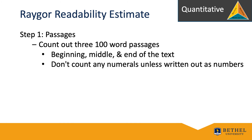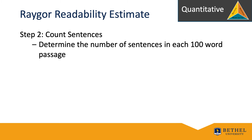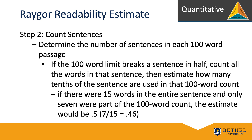Don't count any numerals unless they are written out as numbers — for example, not '4-3' but 'forty-three.' Rager is an average of the three passages. You can do a quick count conducted on one passage, but it is guaranteed to be less accurate. Step 2: Count the sentences. Determine the number of sentences in each 100-word passage. If the 100-word limit breaks a sentence in half, count all the words in that sentence, then estimate how many tenths of the sentence are used in that 100-word count. For instance, if there were 15 words in the entire sentence and only 7 were part of the 100-word count, the estimate might be 0.5 — that is, 7 out of 15 equaling 0.46, rounded up to 0.5.